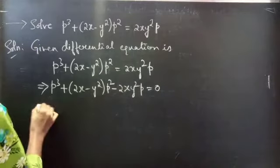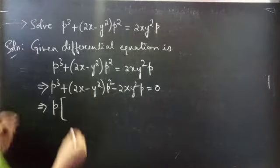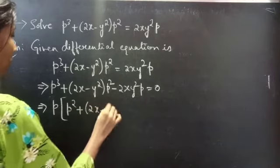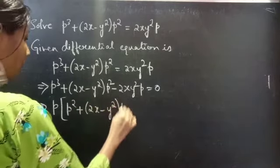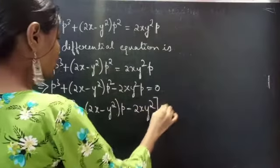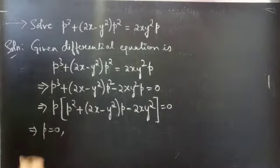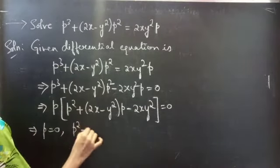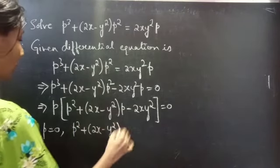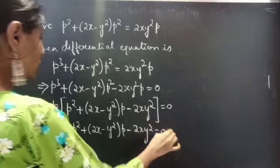We have P in all three terms, so take P common from all of them. You will get P times P square plus 2X minus Y square into P minus 2XY square equals to 0. Then, P equals to 0 and P square plus 2X minus Y square into P minus 2XY square equals to 0.